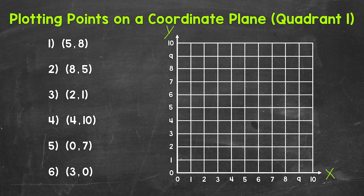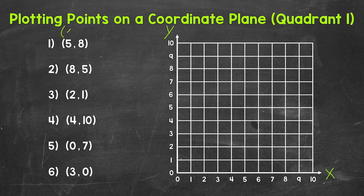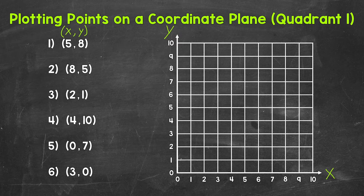Starting with number 1, where we have the coordinates 5, 8. So this is our ordered pair for number 1. Remember, the x-coordinate always comes first, and the y-coordinate always comes second. So 5 is the x-coordinate, and 8 is the y-coordinate. If you forget that order, just think ABC order — x comes before y. With 5, 8 being our ordered pair, this means that we go over 5 and then up 8, going from the origin, which is at 0, 0.